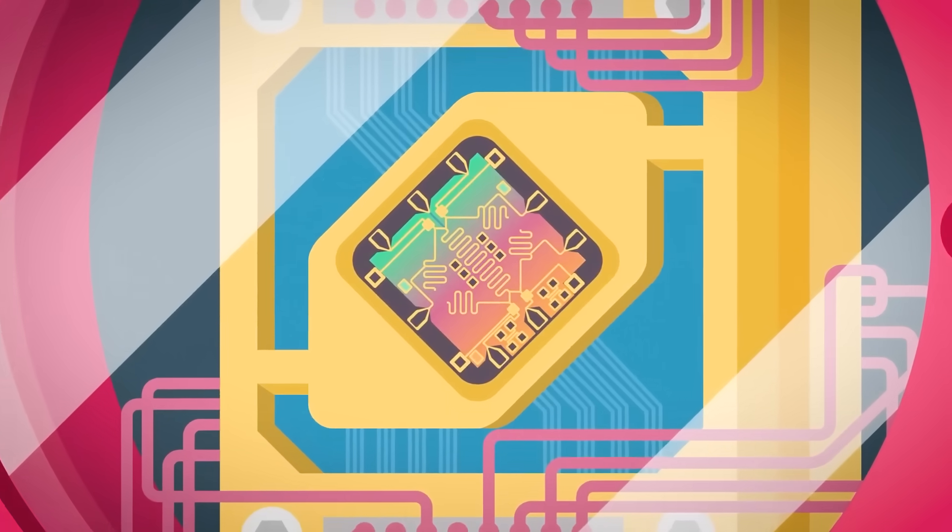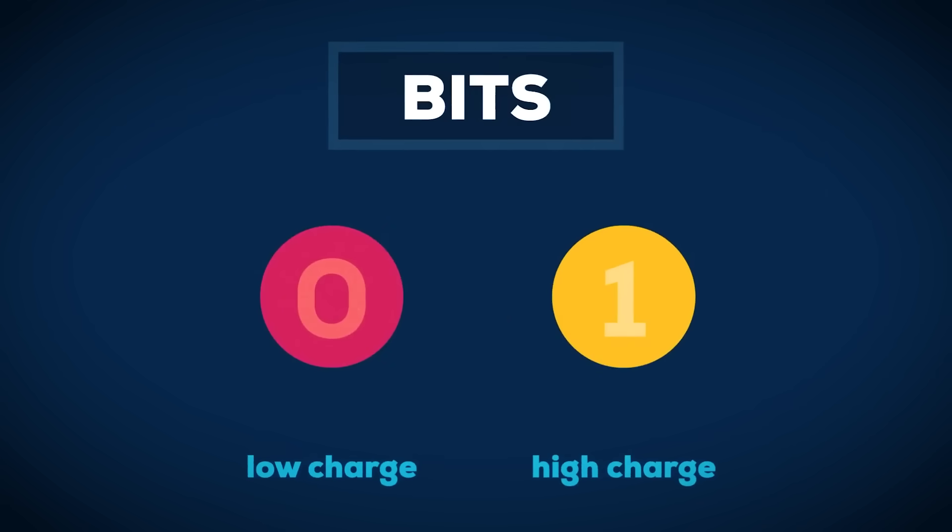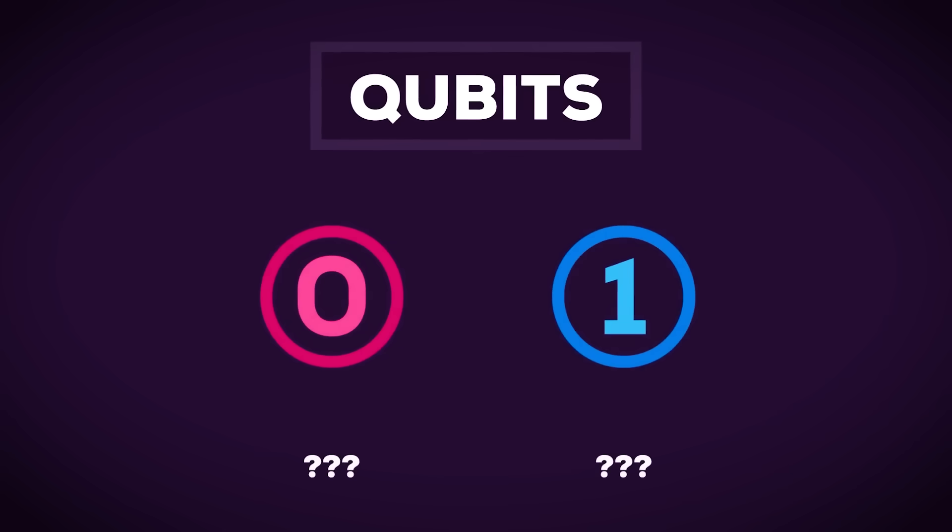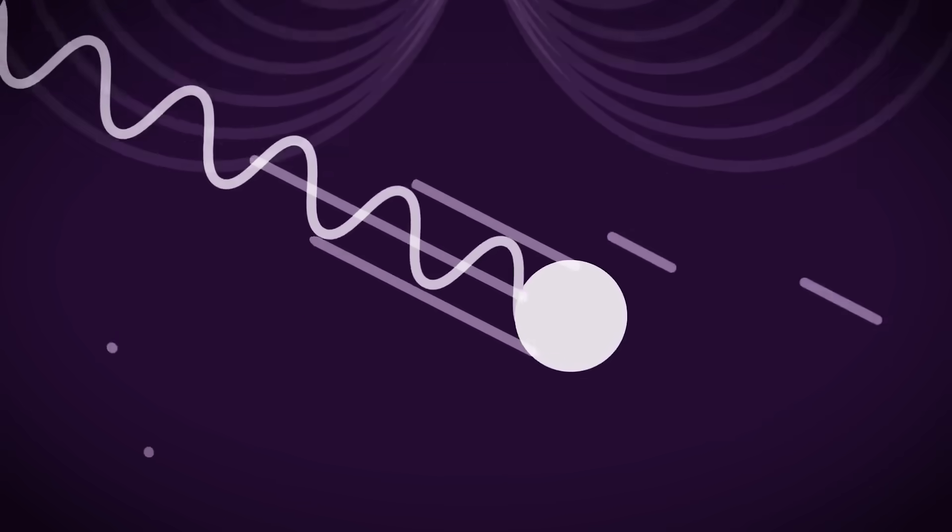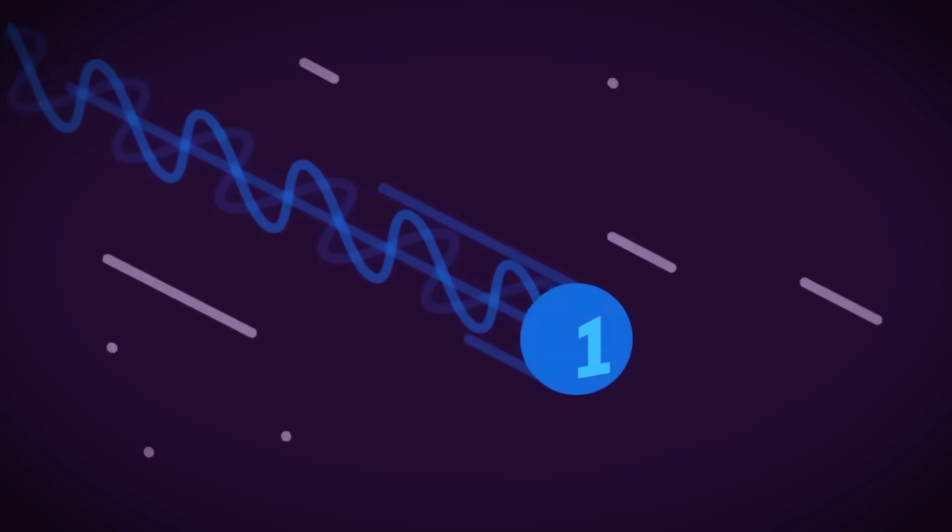Classical computers process information using bits, which exist in one of two states, zero or one. Quantum computers, on the other hand, utilize quantum bits, or qubits, that harness the principles of quantum mechanics. Qubits can exist in a state of superposition, meaning they can be both zero and one simultaneously.